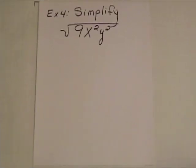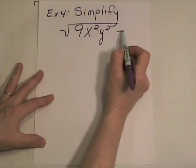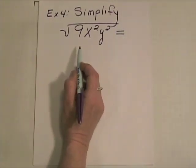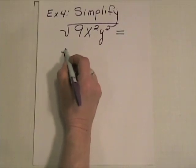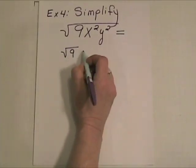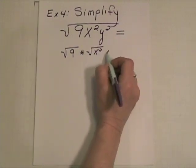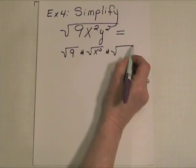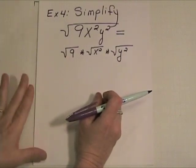One final example here. The directions say, simplify the square root of 9x squared, y squared. Well, as we've seen previously, this one product here can be broken down to the square root of its various factors. So, we could have the square root of 9 times the square root of x to the second times the square root of y to the second. This is equivalent to that. It's just two different ways of writing the exact same thing.